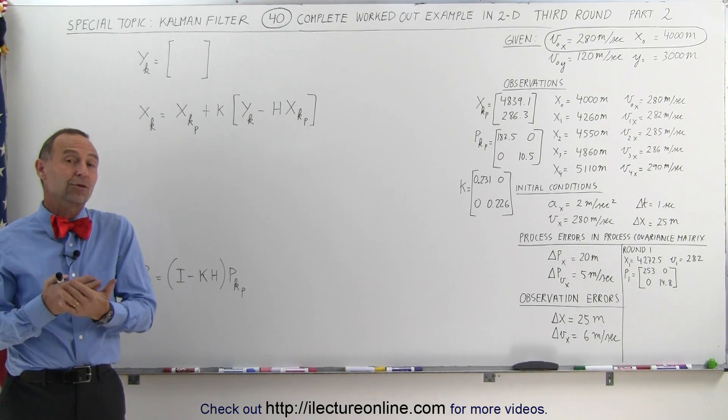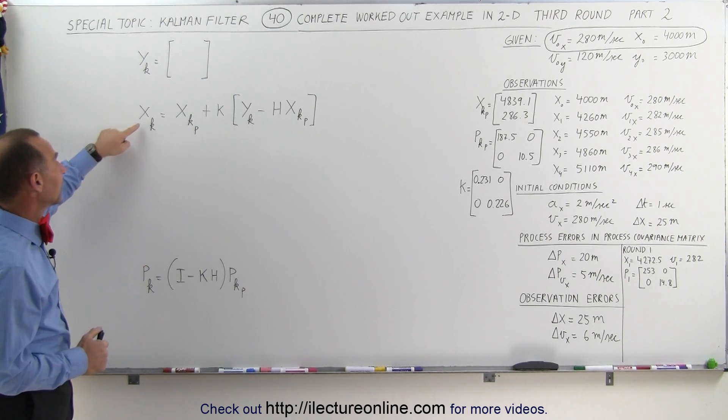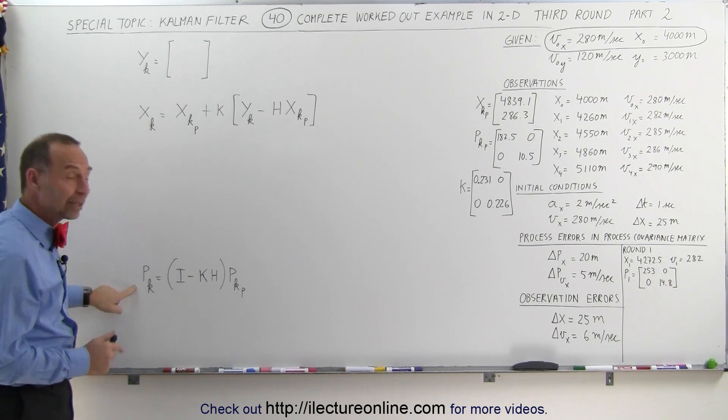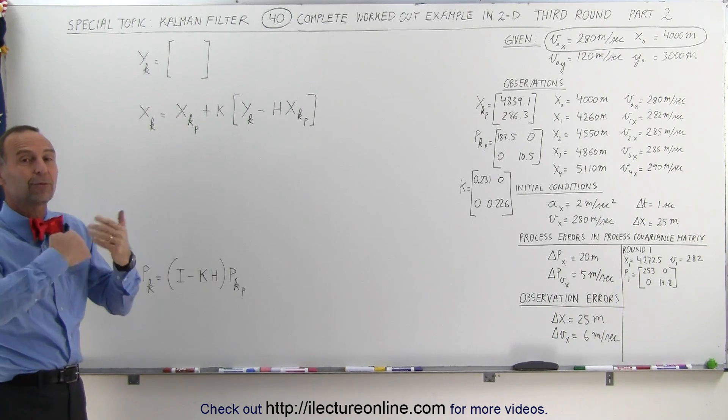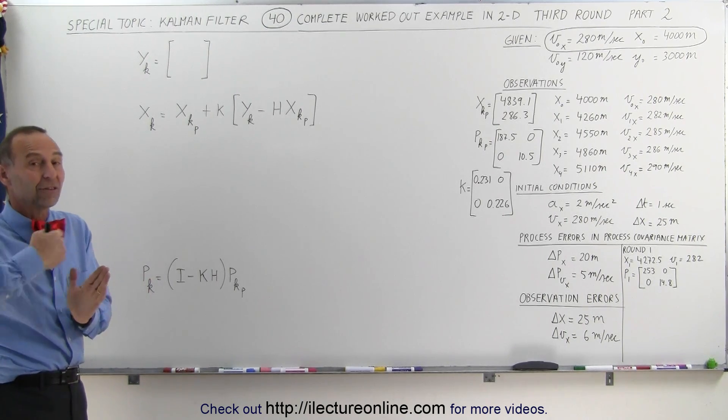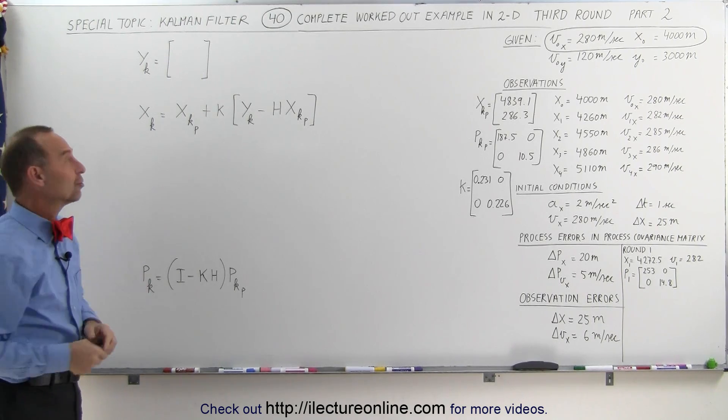Welcome to Electron Online. Now we're ready to do part two of round three. Primarily we're going to calculate the new state matrix, and then we're going to calculate the new or current process covariance matrix to set us up for round four. We're not going to do round four—I think three rounds is enough to see how the process works—but you still need to do this in each round.